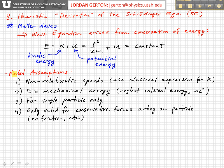The assumptions we're going to use to develop this model leading to the Schrödinger equation are: first, we're talking about non-relativistic speeds, so we can use the classical expression for kinetic energy. Also, E, the total energy, is actually just the total mechanical energy — we're neglecting the internal energy of the particle.